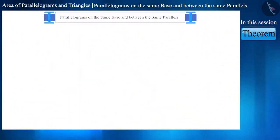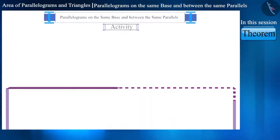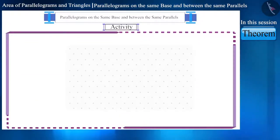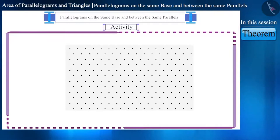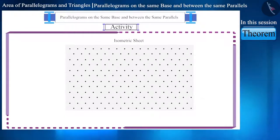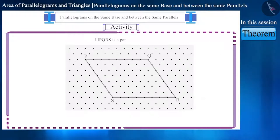Let's start with an activity. Take this type of sheet where the points are at equal distance — we call this the isometric sheet. On this we will create the parallelogram PQRS.